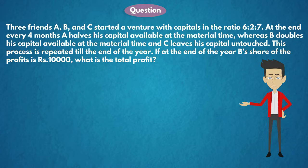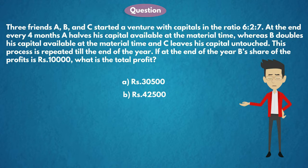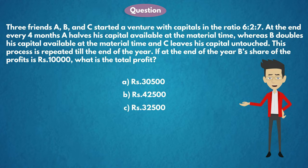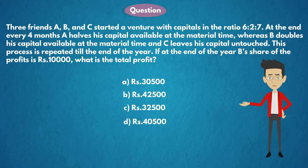The options are: Option A – Rs. 30,500; Option B – Rs. 42,500; Option C – Rs. 32,500; Option D – Rs. 40,500; and Option E – Rs. 31,500.